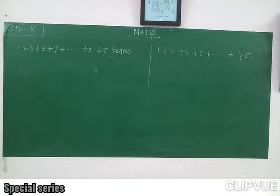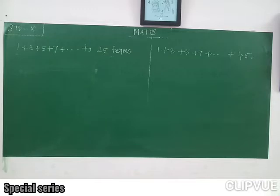Now we are going to find the sum of 25 terms. You can see that 1 plus 3 plus 5 plus 7. What is the sum of first 4 terms? 1 plus 3 is 4, plus 5 is 9, plus 7 is 16. So first 4 term sum is equal to 16.